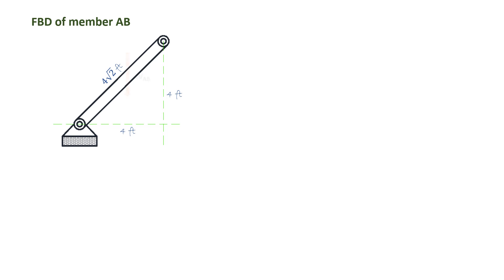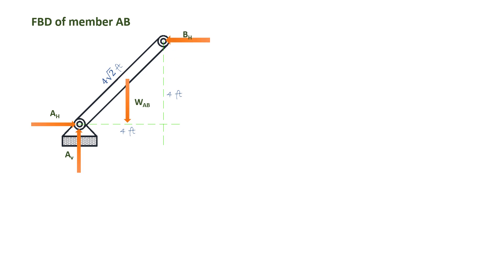We know that there is a force acting at the center of gravity of that member, which is its weight. We call that weight WAB. We have the reaction force at pin A and its vertical reaction. We also have the horizontal reaction of pin B and its vertical reaction. The directions are assumed, and we can determine the correct directions by comparing the signs of our final answers to our declared assumptions.